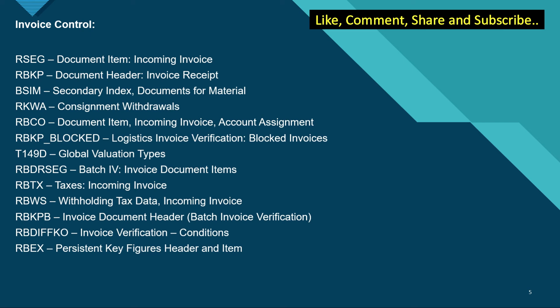Lastly, talking about invoice control, we have these important tables. RSEG is the document item of the invoice. RBKP is the document header of the invoice receipt. BSIM has the secondary index documents for material. RKWA has consignment withdrawals.